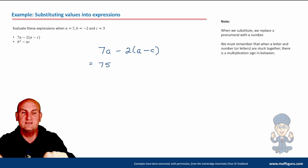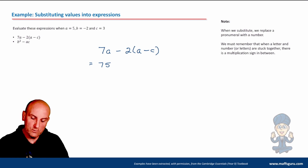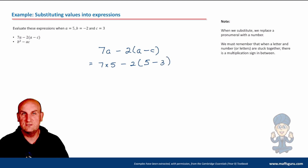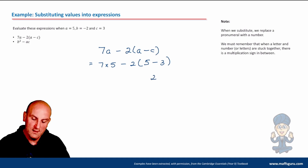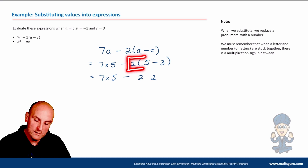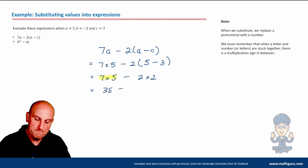I put the times sign in when substituting - otherwise our brain might misread 7 and 5 as 75. So minus 2, brackets - the value of A is 5, minus the value of C which is 3. Now BIDMAS: brackets first, 5 minus 3 is 2. I copy down the rest of the maths. Between the number and the bracket is a times. So 7 times 5 is 35, minus 2 times 2 is 4. My answer is 31.